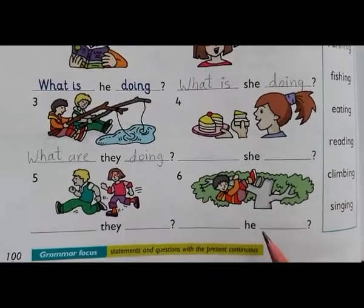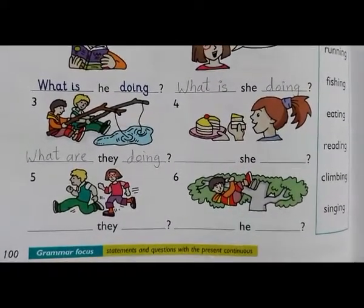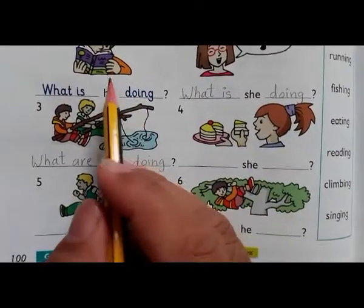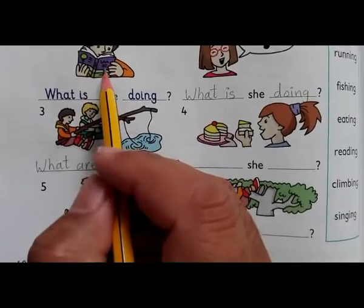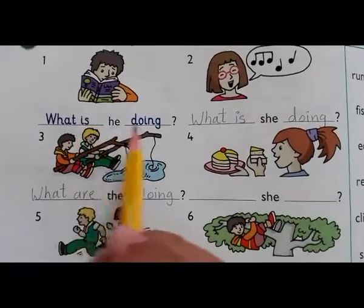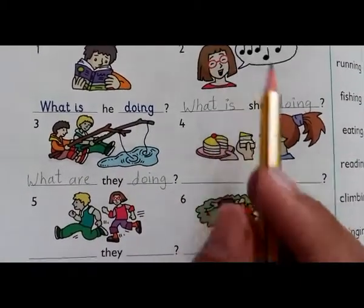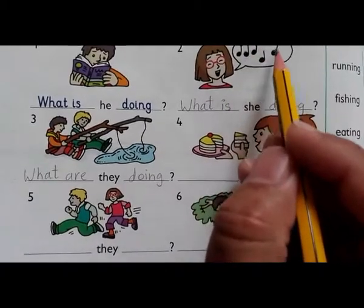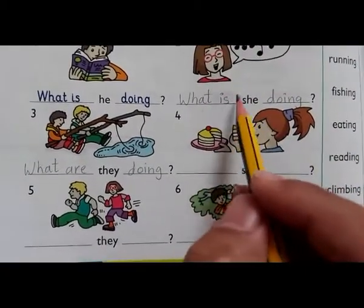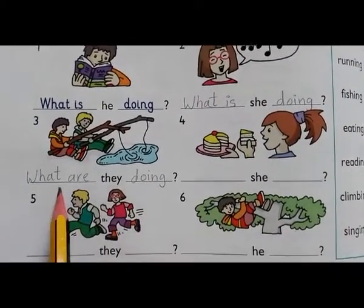Now after completing these questions we will see the answers. What is he doing? He is holding a book and he is reading — he is reading. What is she doing? She is singing — she is singing. What are they doing? They are fishing.